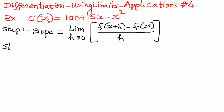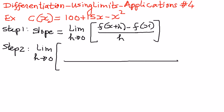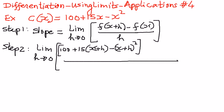In the second step, we're going to substitute the given function into this formula. Therefore, we can write this as the limit as h approaches 0. The first part is: 100 plus 15 times (x plus h), minus (x plus h) the whole thing raised to the power of 2. The second part of the formula is 100 plus 15x minus x squared, this whole thing divided by h.